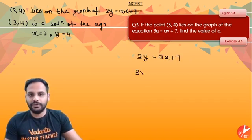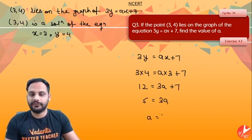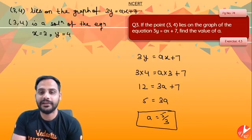So let's put it: 3y is equal to ax plus 7 given. So it will become 3 into 4 is equal to a into 3 plus 7. So 3 into 4 is 12 is equal to 3a plus 7. Shift 7 over there, 12 minus 7 is 5 is equal to 3a. Shift 3 in division, so a is equal to 5 by 3. So the value of a will be equal to 5 by 3.